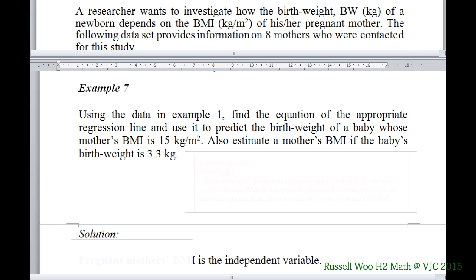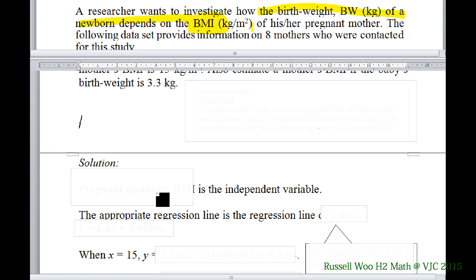And if I may refer all of us, the researcher in example 1 wants to find out, wants to investigate how the birth weight depends on the BMI. So this BMI is now a clear-cut independent or control variable. So X is a clear-cut independent or control variable. We collect data inside the BMI and then measure the birth weight as a child. So here is a very clear-cut independent or control variable, which is the pregnant mother's BMI.